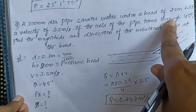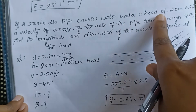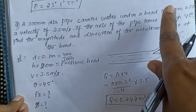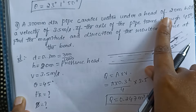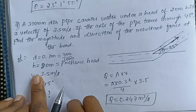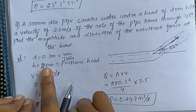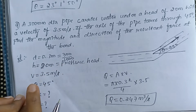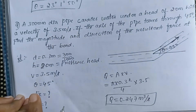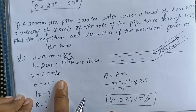Similarly, the head of the water flowing in the pipe is given as 20 meters. This head represents the pressure head, and we denote it as h = 20 meters. The velocity at which water is flowing in the pipe is also given; let v be the velocity, which is 3.5 meters per second.